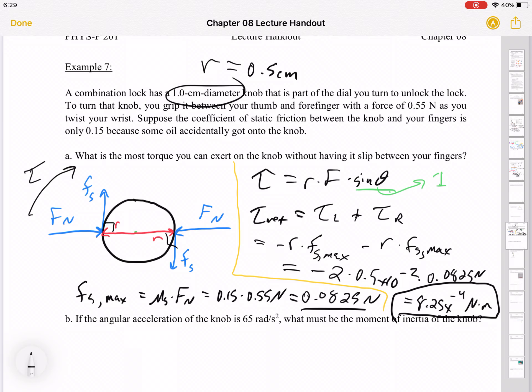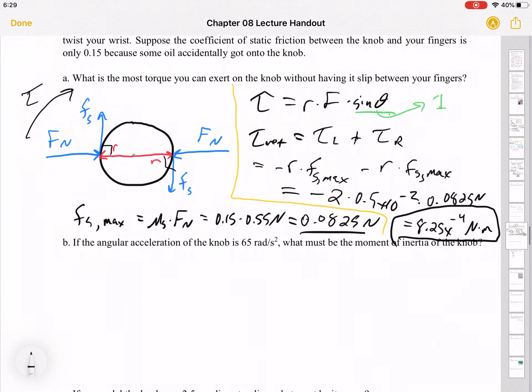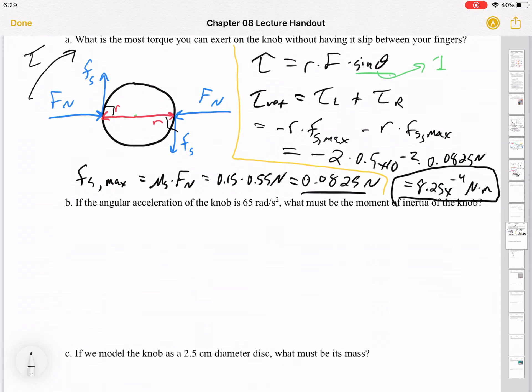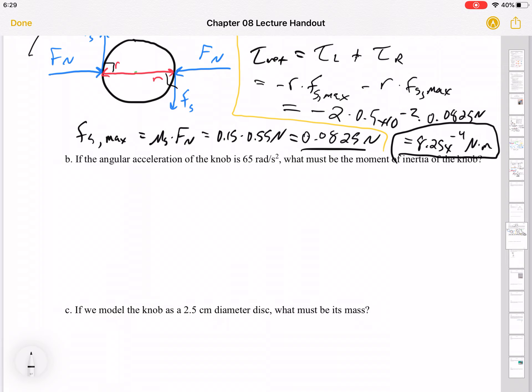I'm going to drop the negative sign again. I chose the direction here, so that negative sign doesn't really mean anything. We're just looking for a magnitude of a torque anyway. Okay, letter B. If the angular acceleration of the knob is 65 radians per second squared, what must be the moment of inertia of the knob?